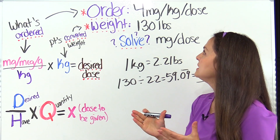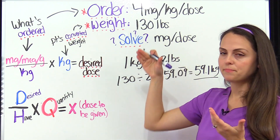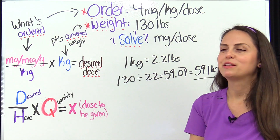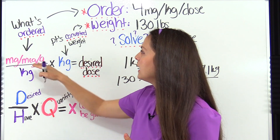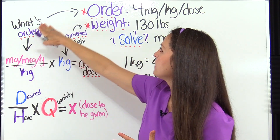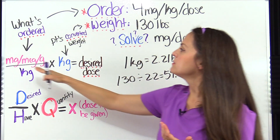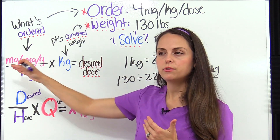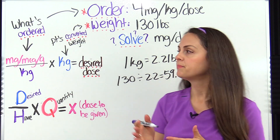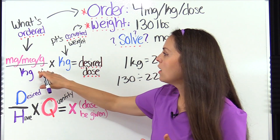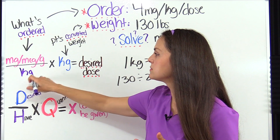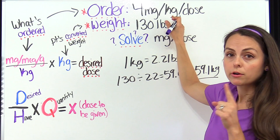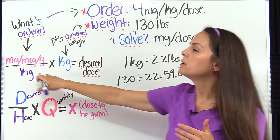Now we need to figure out how many milligrams per dose they should be getting. We can use this formula. In the first part of this formula, we plug in the information from what the physician ordered. In the top part, we put the strength that was ordered with its units — milligrams, micrograms, grams, or units — divided by the kilograms. For this problem, it says for every kilogram the patient weighs they need four milligrams, so we put a one there.